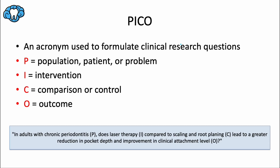I want to start with PICO, which is a fundamental building block of clinical research. The acronym PICO is a framework often used in evidence-based practice to formulate research questions and to guide systematic searches for relevant studies. A good clinical question should cover these four areas.